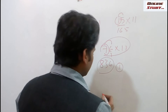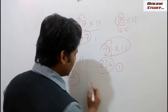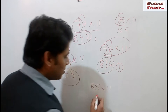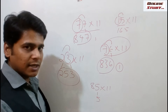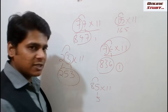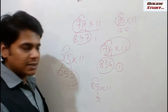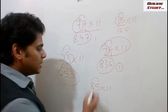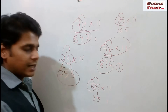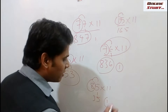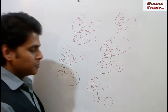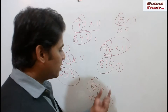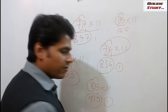We will see another example: 85 into 11. Place the units place as it is — that is 5. Then 8 plus 5, that is 13. We will place 3 and 1 will be carried forward. The next step is we need to place 8, but since we have a carry forward of 1, we should add them: 8 plus 1 is 9. So the multiplication of 85 into 11 is 935.